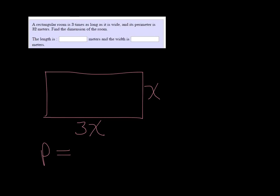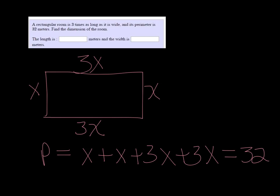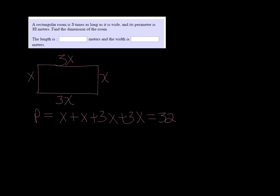So we have another 3X here and an X here, so we get X plus X plus 3X plus 3X, and that equals 32. Combining like terms, we have 8X equals 32.